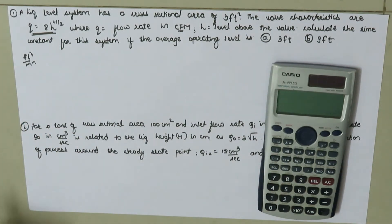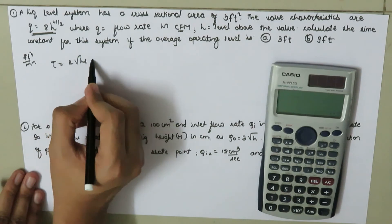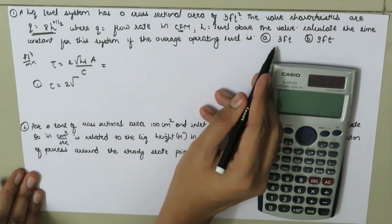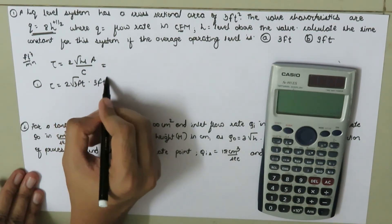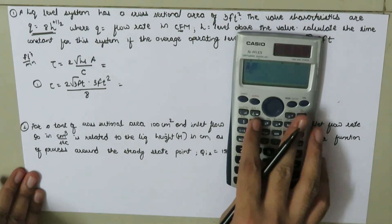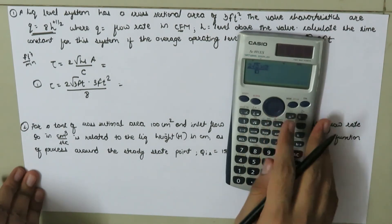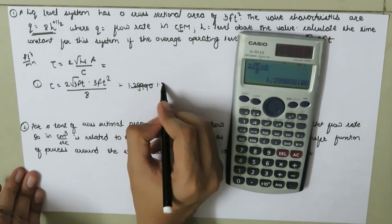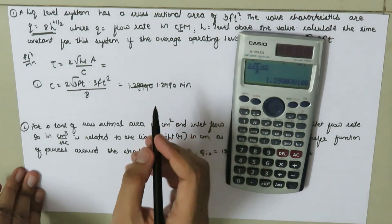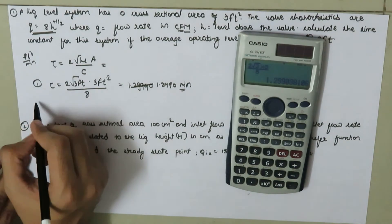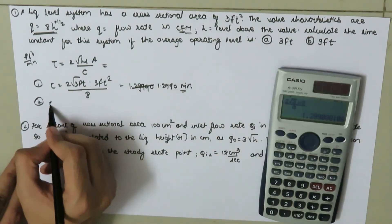This problem involves linearization of a nonlinear system. Using τ equals 2√H_s times A divided by C, with A equals 3 ft² and C equals 8: for H_s equals 3 ft, τ equals 2·√3·3/8 ≈ 1.2990 minutes. For H_s equals 9 ft, τ equals 2·√9·3/8 equals 2.25 minutes.